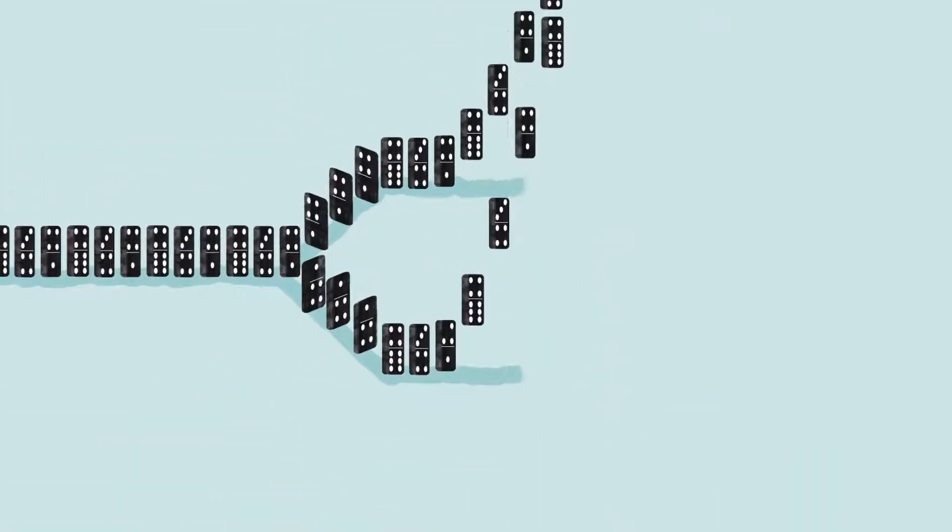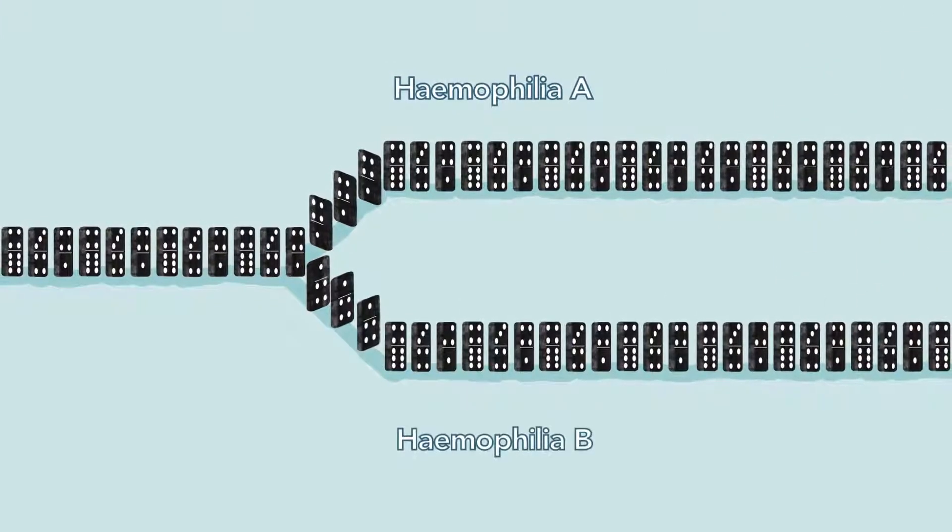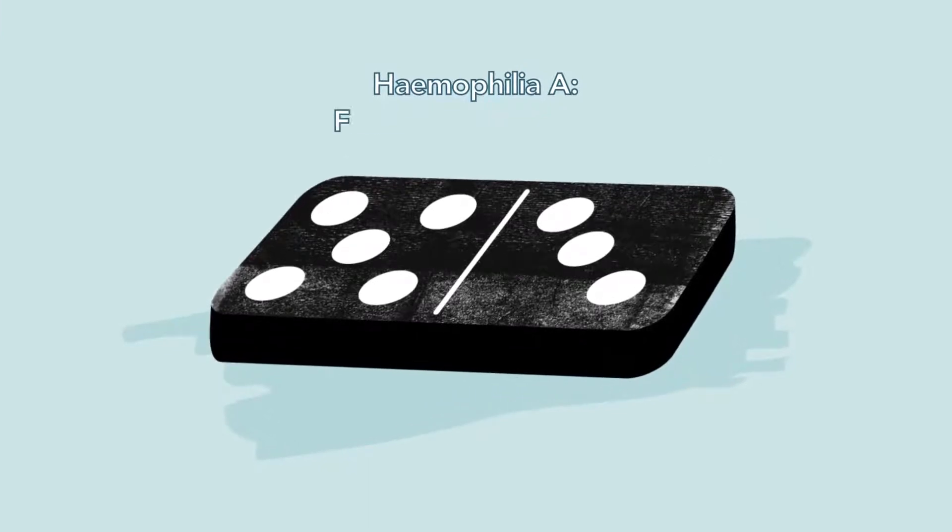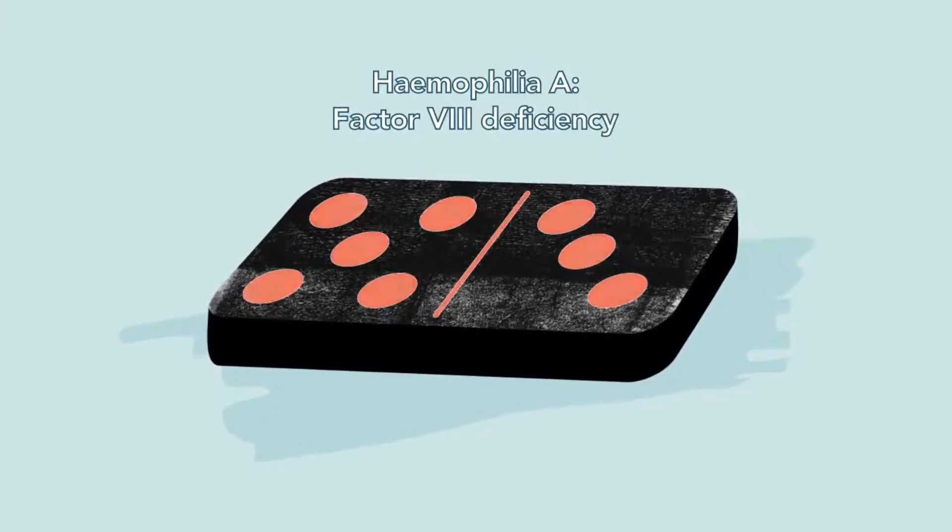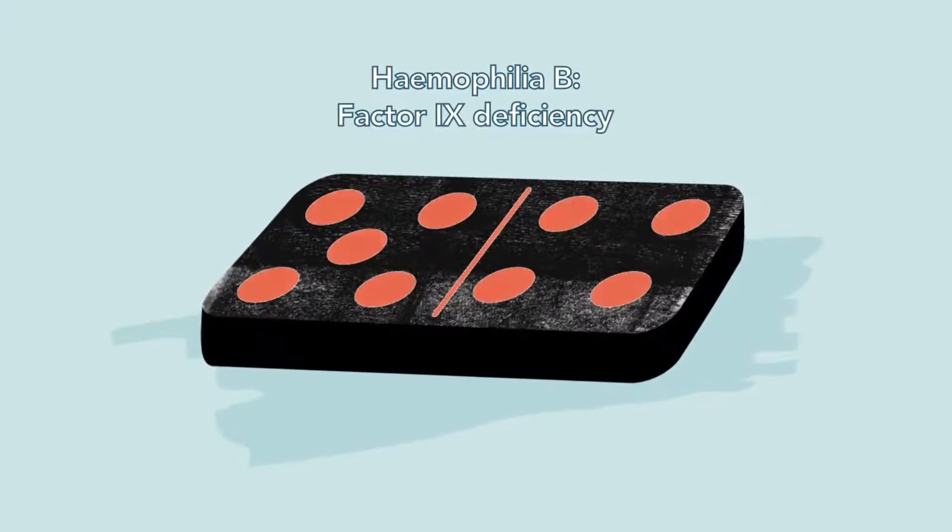There are two main types of haemophilia: Haemophilia A and Haemophilia B. People with haemophilia A have little or no factor 8. People with haemophilia B have little or no factor 9.